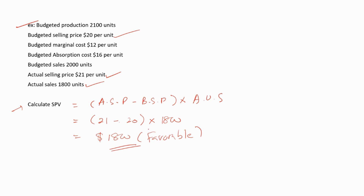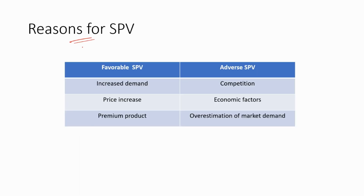This is favorable because the actual selling price is higher than the budgeted selling price — a higher actual selling price means a positive impact on the company. Potential reasons for a favorable sales price variance include increased demand, a price increase, or a premium product. For adverse variances, causes include competition, economic factors, or overestimation of market demand.